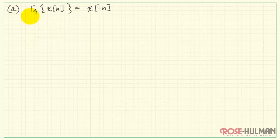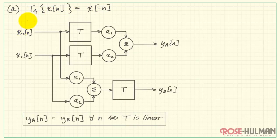Let's move on to the detailed solution. For system T4, we have X of minus N. We'll begin with our proof structure. And we are trying to establish whether or not YA is equal to YB for all N. Let's pass X1 through the system. This would give us X1 of minus N. I'll scale this by A1. And then do the same thing with X2. Pass that through the system. We have X2 of minus N. Multiply that by A2. Sum those together and produce the output.